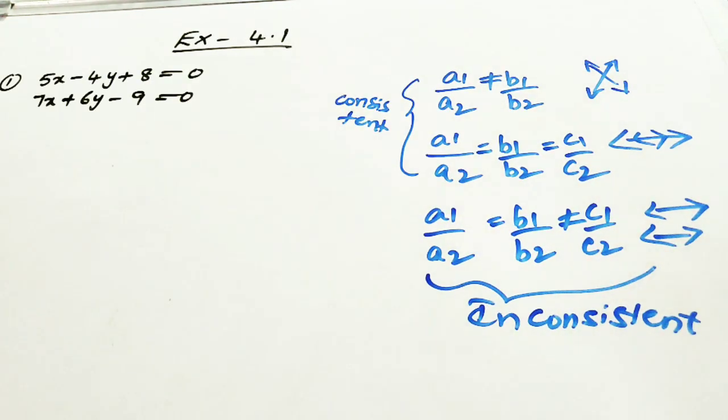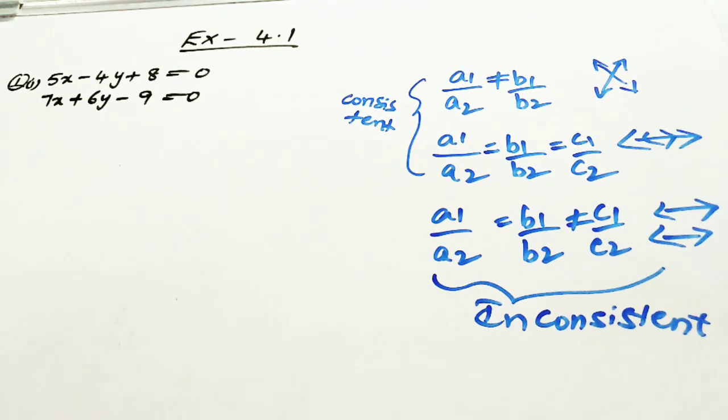Exercise 4.1 of pair of linear equations in two variables, question 1. In that question 1, you are discussing the first bit: 5x minus 4y plus 8 is equal to 0, 7x plus 6y minus 9 is equal to 0.